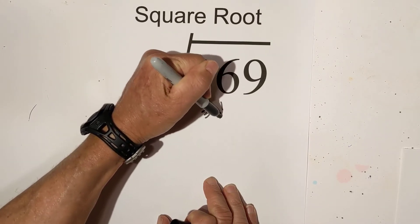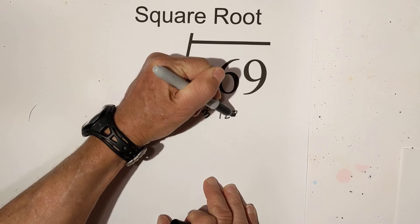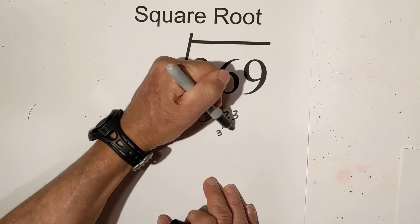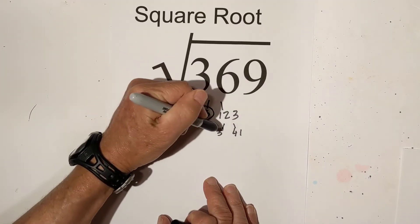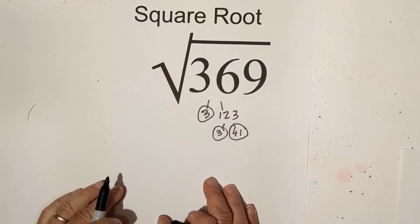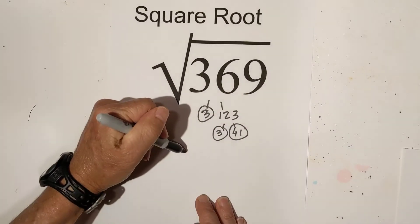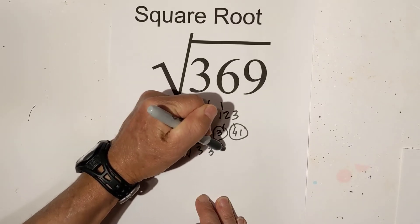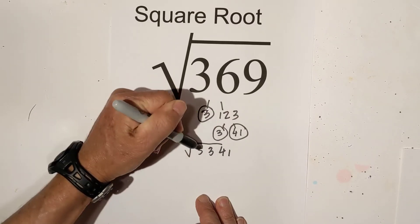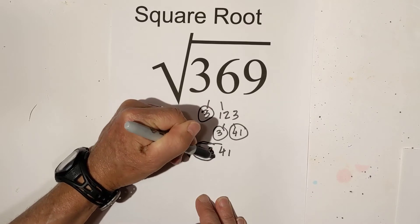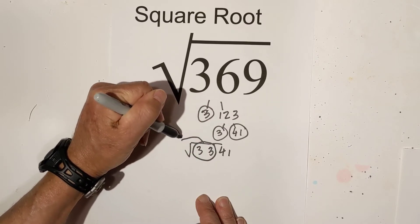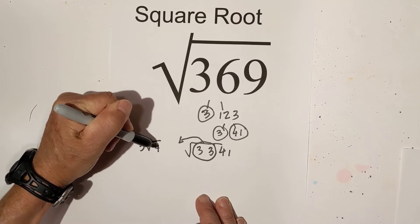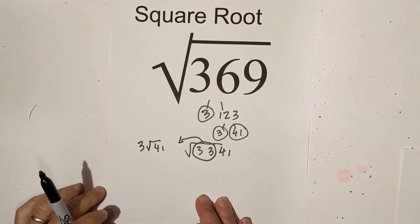3 times 123. Circle the 3 because it is prime, and then we have 3 times 41. Circle the 3 and the 41 because they're both prime. If you place them under the sign, you have 3, 3, 41, and you can pull pairs out, so it becomes 3 square root of 41. That would be simplified.